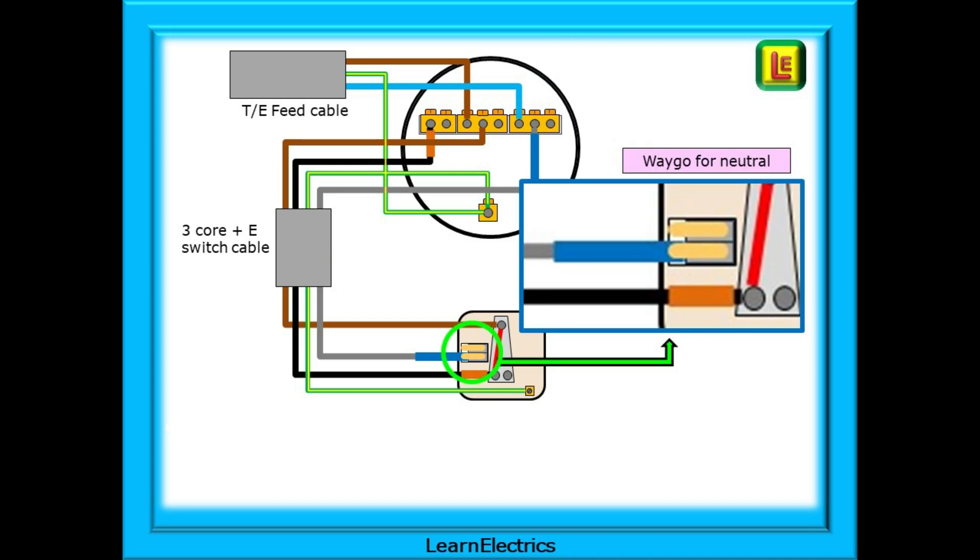We must terminate the neutral wire into something. We cannot, must not, just leave it loose and exposed in the back of the switch. We can use a WAGO, a terminal strip, or any other suitable terminal that will do the job safely and efficiently.